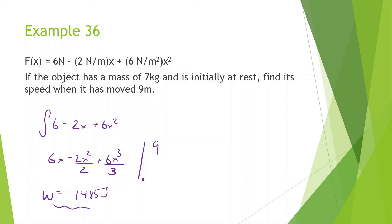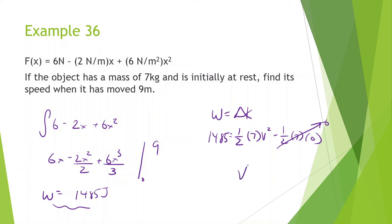Since the total work equals the change in kinetic energy, we have 1485 = one-half times 7 times v squared, with initial velocity equal to zero since it starts from rest. Solving for v — multiply by 2, divide by 7, take the square root — we get approximately 20.6 meters per second.